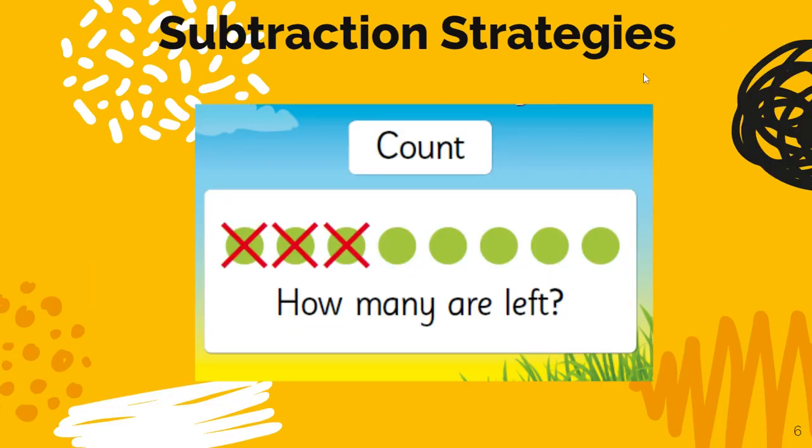So there's different strategies you can use to subtract. You could use your fingers and count backwards, kind of like what's shown here. So if I started out with 8 and then I put 3 down or got rid of 3, I could see how many are left.